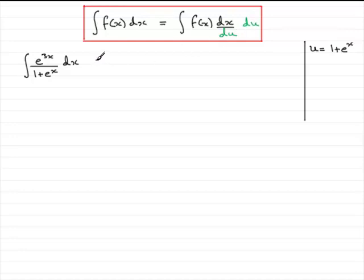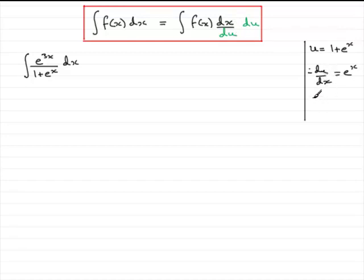So how do we do it? We need to establish what dx by du is. We can do that by starting to differentiate. We can find what du by dx is if we differentiate with respect to x first. So du by dx is simply e to the x. Because we want dx by du, we invert this and end up with dx over du equals 1 over e to the x.